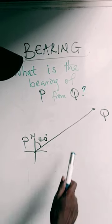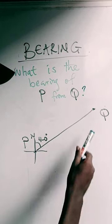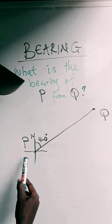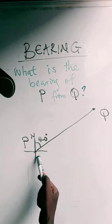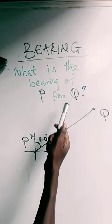Here you are asked to find the bearing of P from Q. What is given to you here is the bearing of Q from P. To get the bearing of P from Q, that is to say the bearing is coming from Q, how do we do that?